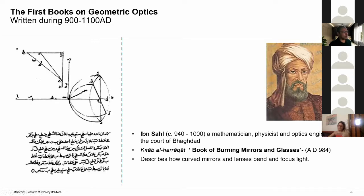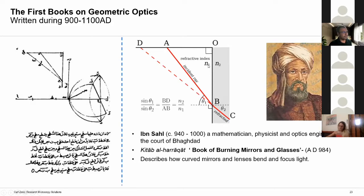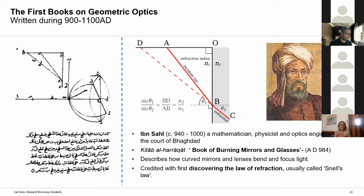Assuming an interface with two refractive indices N1 and N2, AB is the incident ray, BC is the refracted ray. If we backtrace the refracted ray we get BD, and using simple trigonometry we can write sin(θ1) / sin(θ2) = BD / AB = N2 / N1. This is the first known description of Snell's law. Many science historians believe Snell's law was actually discovered by Ibn Sahl almost 500 years before Snell was born.